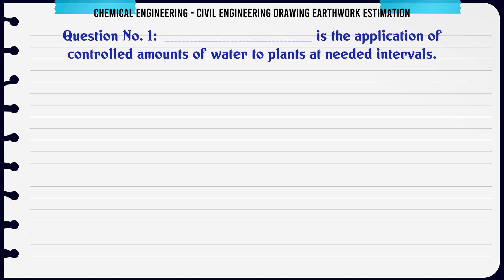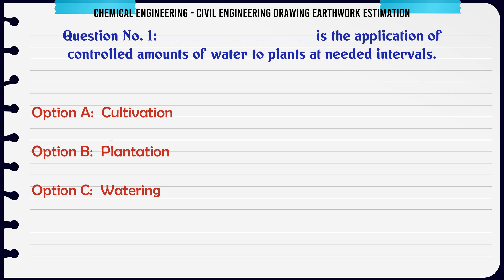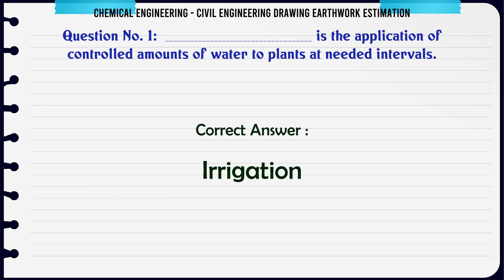Is the application of controlled amounts of water to plants at needed intervals. A. Cultivation. B. Plantation. C. Watering. D. Irrigation. The correct answer is: Irrigation.